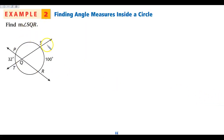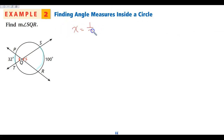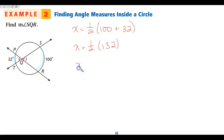I want to find the measure of angle SQR. This angle and its vertical angle intercept two arcs. Since I am on the inside, I'm doing half of the sum. So X is going to be half of 132, which is going to be 66 degrees. When your vertex is inside your circle, it is half the sum of the two arcs.